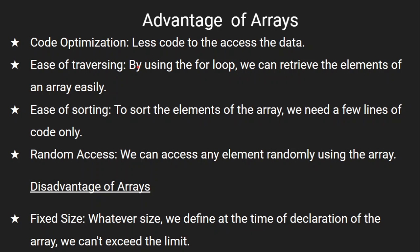The next advantage is ease of traversing. Ease of traversing means when you traverse through array elements, either by a for loop or a while loop — normally we use the for loop — you can just start from the first element and continuously go to the next element. That is called ease of traversing.